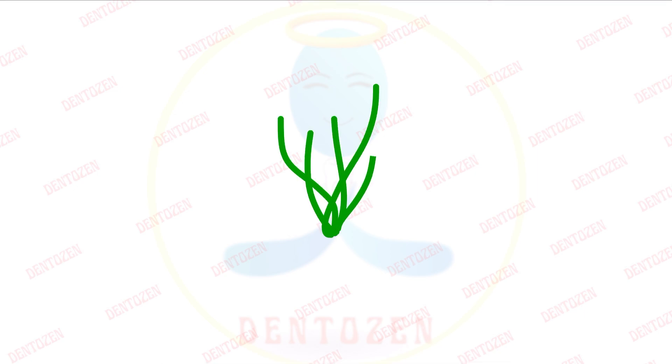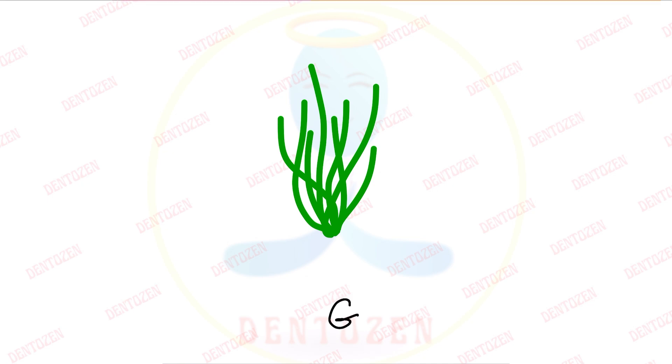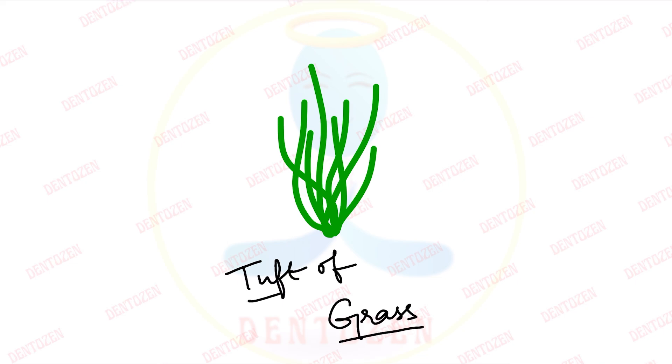Hi everyone, welcome back to Dentizen. Today we are going to see a picture. What do you think what picture is this? Yes, this is a picture of grass. But not just grass — this is a tuft of grass. What do you mean by tuft? Tuft means a small area of grass growing together like this.